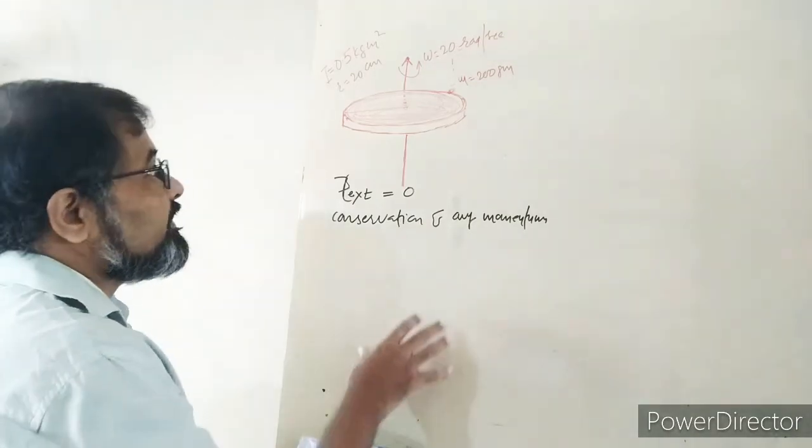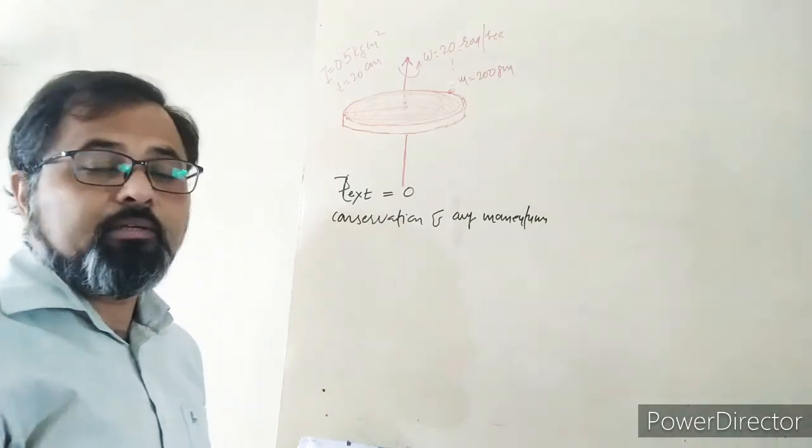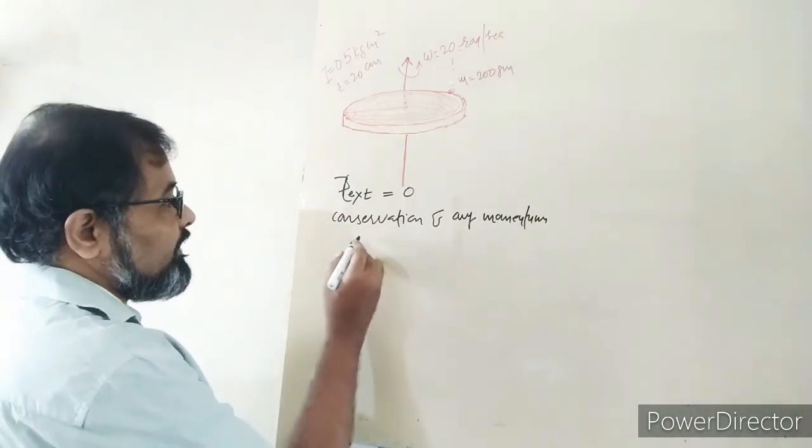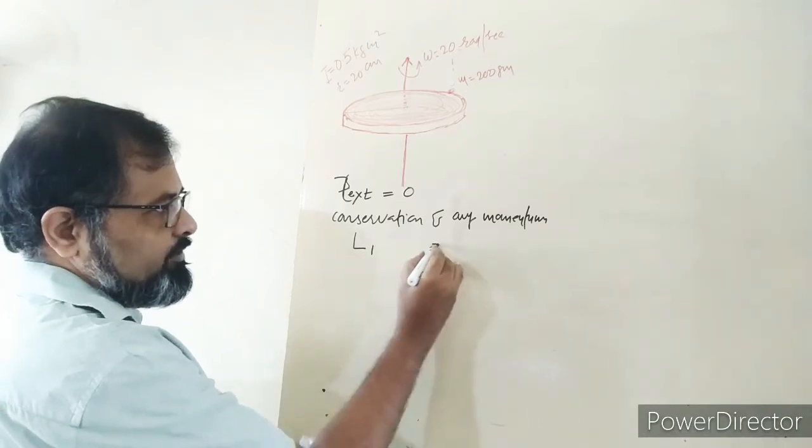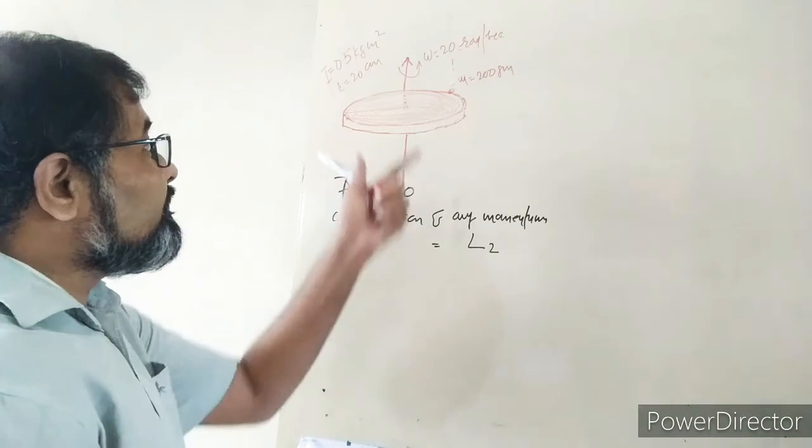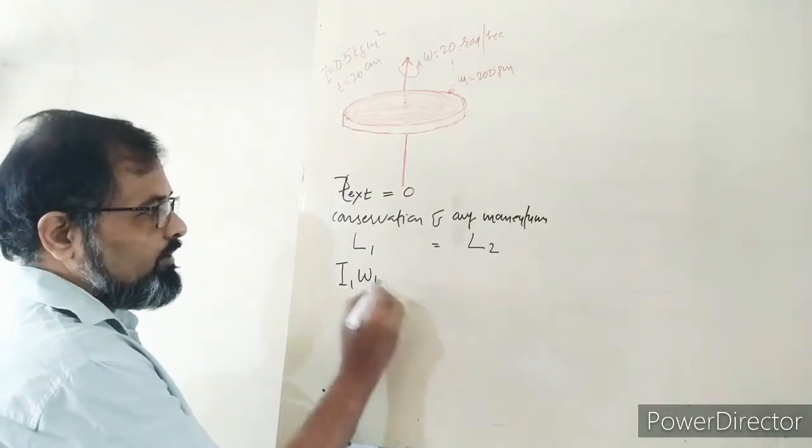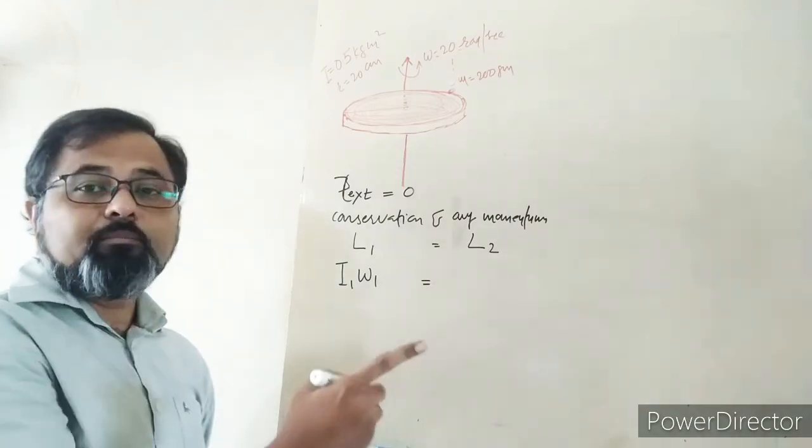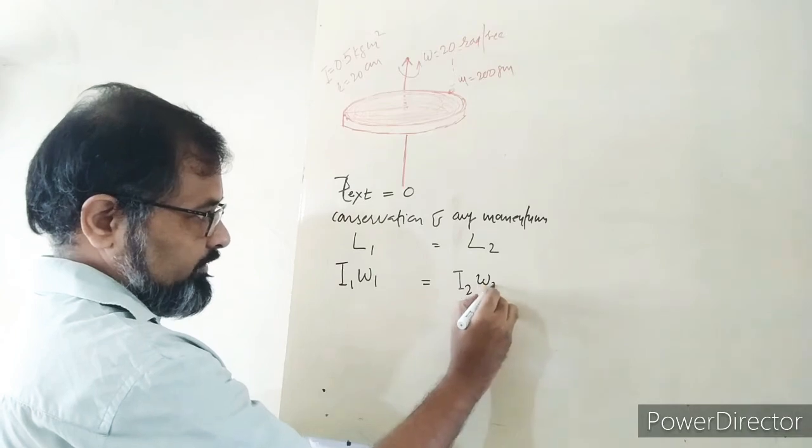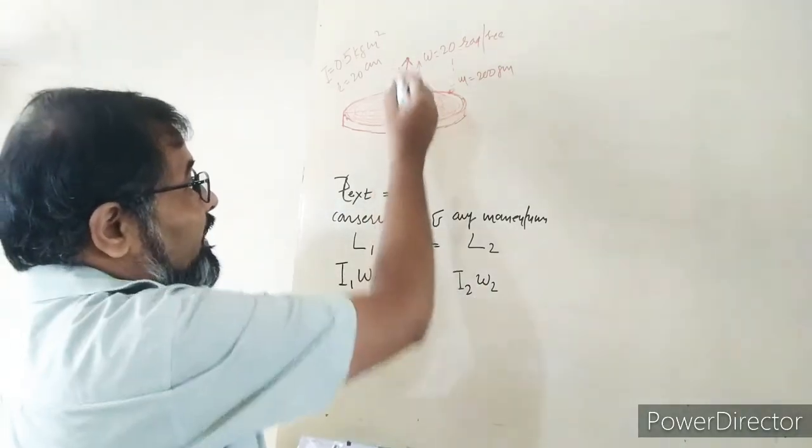Initial angular momentum L₁ is equal to final angular momentum L₂. Initial angular momentum is I₁ω₁ and final angular momentum is I₂ω₂.